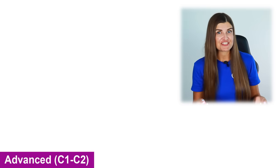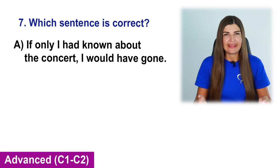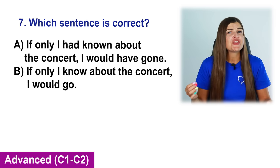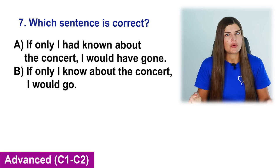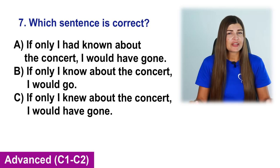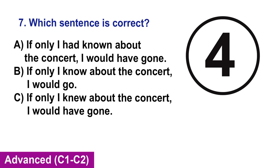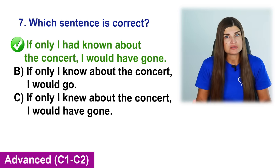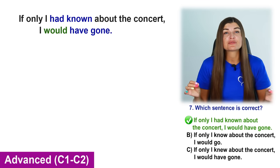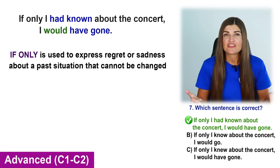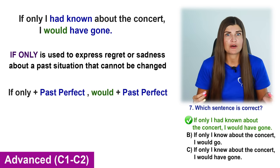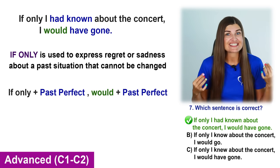Which sentence is correct? A. If only I had known about the concert, I would have gone. B. If only I know about the concert, I would go. C. If only I knew about the concert, I would have gone. The correct sentence is A: If only I had known about the concert, I would have gone. If only is used to express regret or sadness about a past situation that cannot be changed. In this sentence, the speaker regrets not knowing about the concert and expresses their desire to have gone.